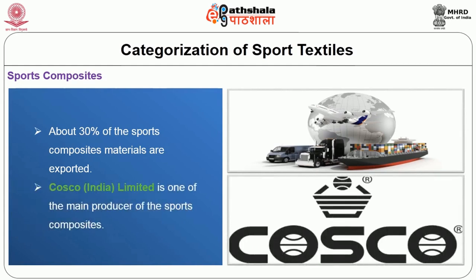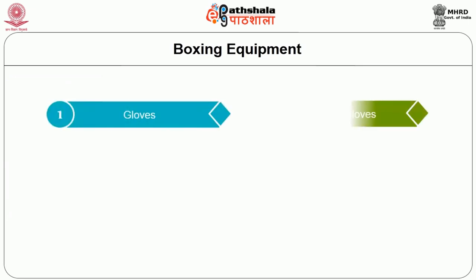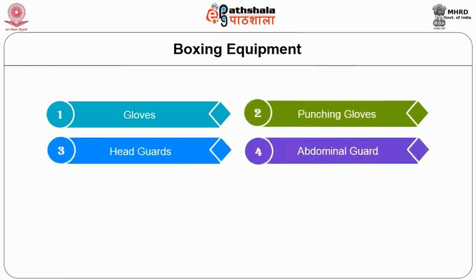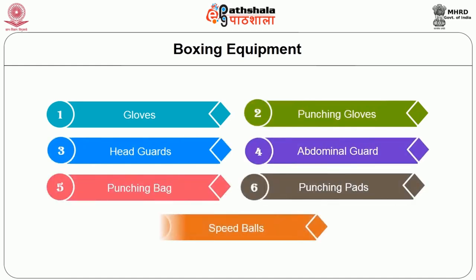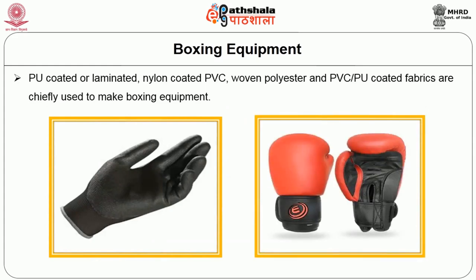Cosco India Limited is one of the main producers of sports composites. Under sports composites, boxing equipment includes gloves, punching gloves, head guard, abdominal guard, punching bags, punching pads and speed balls used for boxing. PU coated or laminated nylon, coated PVC, woven polyester and PVC coated fabrics are chiefly used for making boxing equipment.